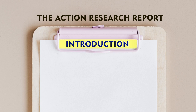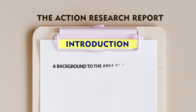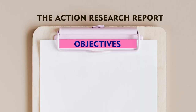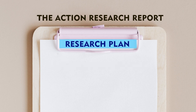What are the steps when you prepare your action research report? First, you write an introduction. The introduction includes an overview of your research project, which may include the research topic, the reasons for undertaking the research, and the background from where this problem has emerged. The background note of your area of research is also part of your introduction. Then you write the objectives of your research — what you are trying to achieve.